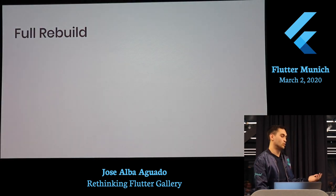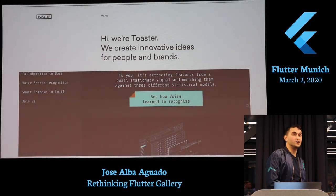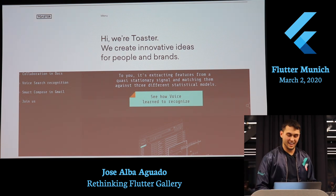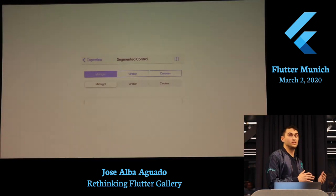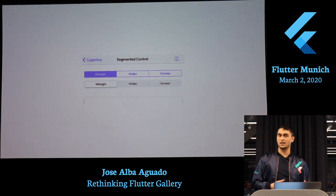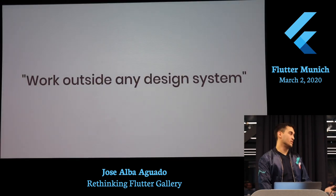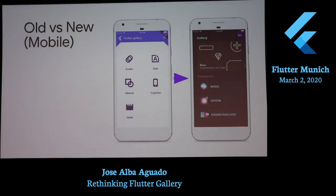We needed to do a full rebuild. In order to do that, we spoke with a design agency called Toaster. Toaster asked whether we wanted Google Material or Cupertino style — and we said not necessarily either, just try any style you have. So Toaster had the freedom to work with any design system, and they came out with this cool design. This is the old Flutter Gallery, and this is the new one — it looks much cleaner.